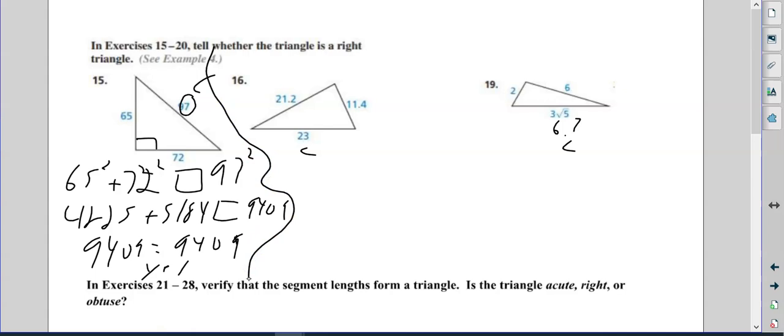So here I'm going to have 21.2 squared plus 11.4 squared equals 23 squared. This time I'm just going to type this into the calculator all in one fell swoop. So 21.2 squared plus 11.4 squared, and you can do this, it's 579.4. I think you can see right away that this is not going to be—since it's a decimal—23 squared is 529, so it is not equal. So no.